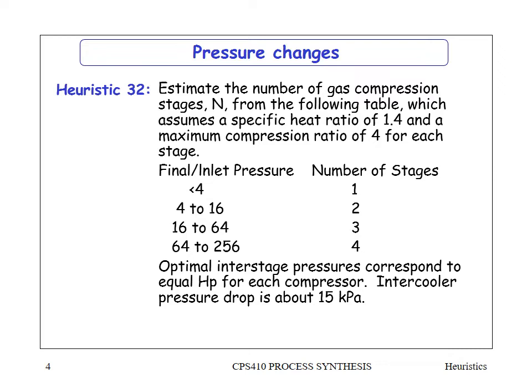Generally, with a one-to-256 bar compressor using four stages, each stage uses the same amount of power provided the pressure ratio is equal across stages — so going from one to four bar uses the same power as going from four to 16 bar, and so forth. The intercooler pressure drop is about 15 kPa, which is relatively small, but it illustrates that you need an intercooler between stages — and that is the whole idea of having separate stages.